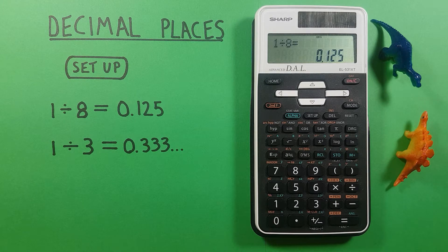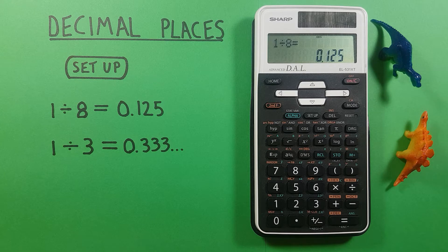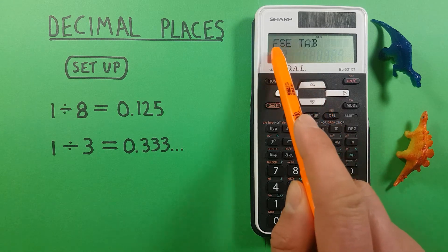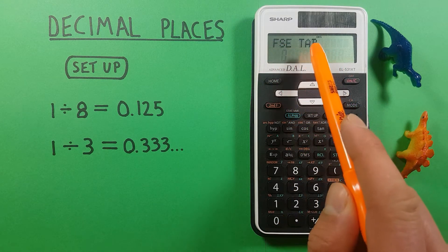Well to do that we can turn our calculator to fix mode and set the number of decimals displayed. To do that we press the setup key and we get this menu here: FSE and tab.